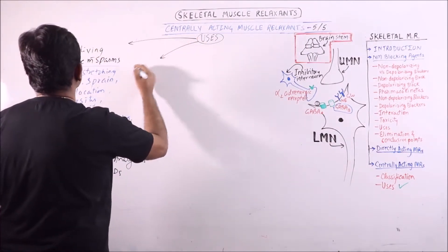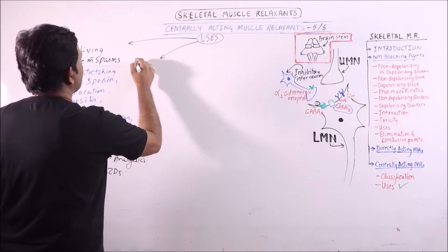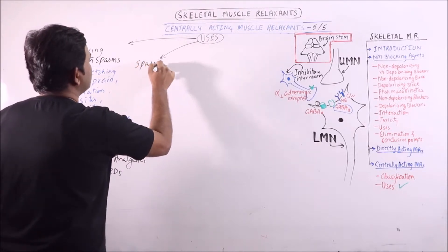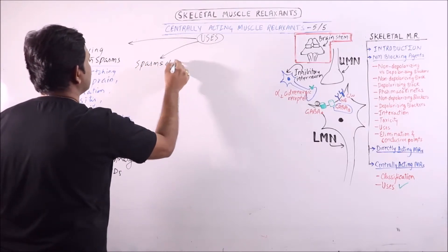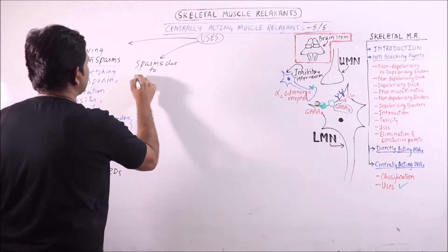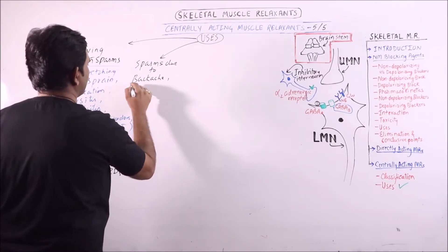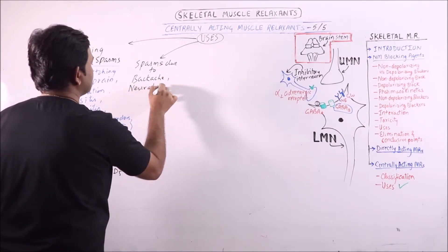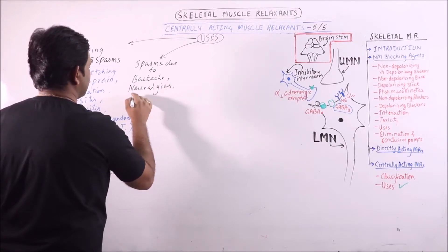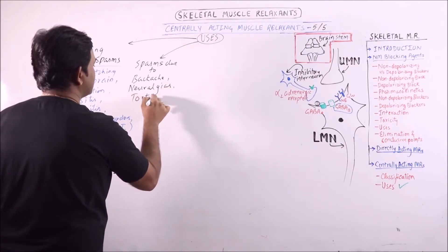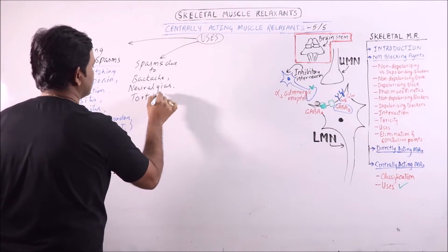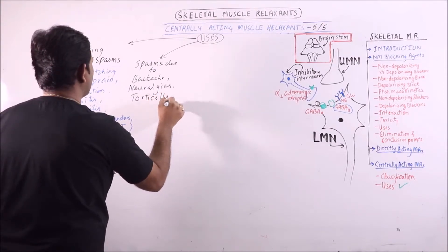Another use: spasms due to backache, neuralgia, congeners, torticollis, or lumbago.